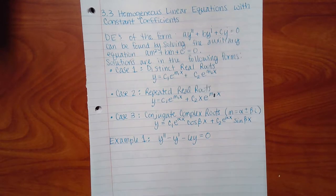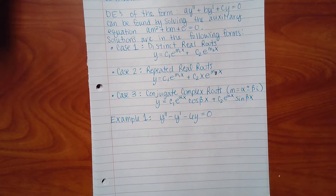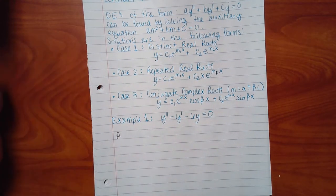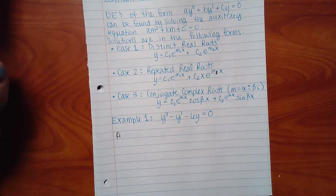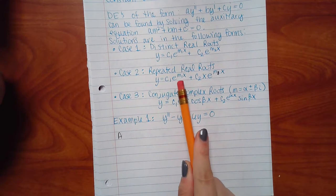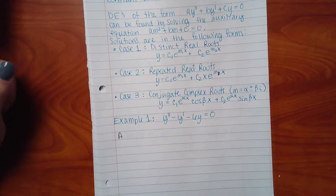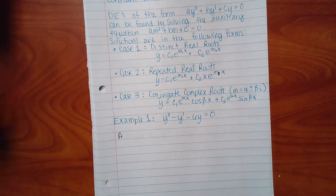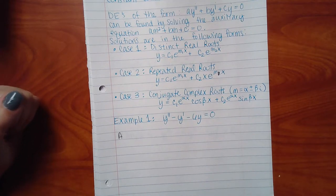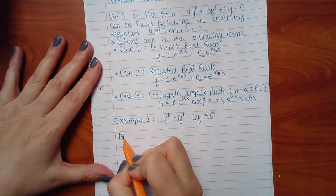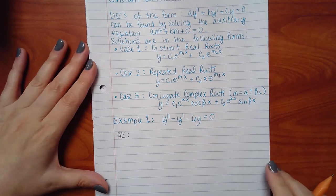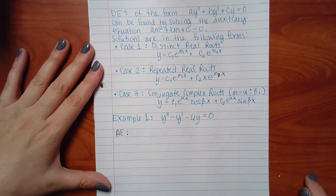Example 1: y double prime minus y prime minus 6y equals zero. We first write the auxiliary equation. The coefficient of y double prime is 1 for m squared, the coefficient of y prime is negative 1 for m, and the constant is negative 6.